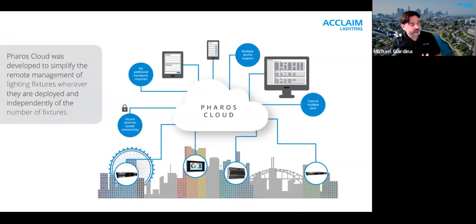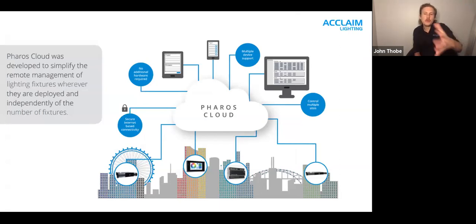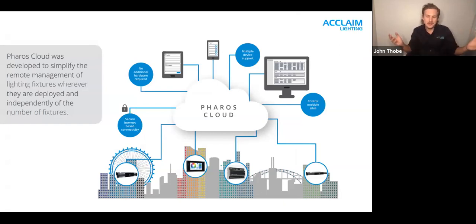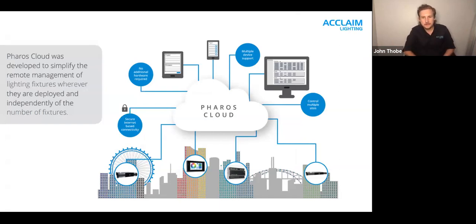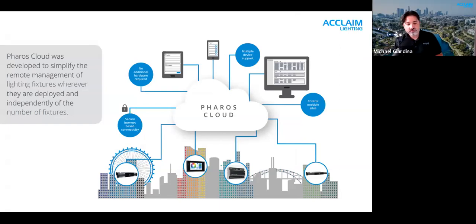When approaching a project with a Pharos control system, Acclaim will include all the hardware elements you need — touch screens, LPC, triggering devices — to operate the system. Regarding remote access, via Pharos Cloud that's easily achievable. You can control, program, and update an entire Pharos system from a remote location, or control multiple locations simultaneously — for example, a national chain ensuring all stores use the same colors at the same time. It features top-end security and no additional hardware is required beyond your Pharos controller.